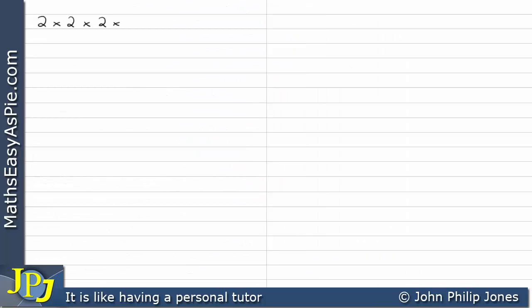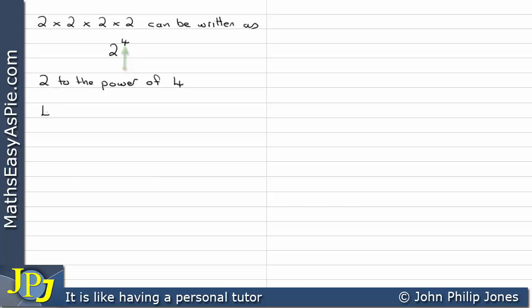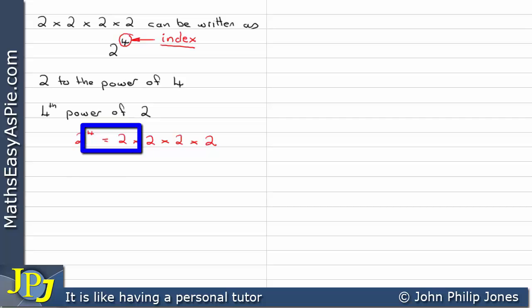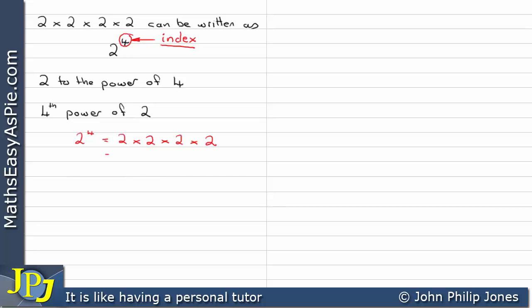2 times 2 times 2 times 2 can be written conveniently as 2 to the little 4, as you can see here, and this is said to be '2 to the power of 4' or 'the 4th power of 2'. The 4 is referred to as the index. So when we see 2 to the 4, we know we can write this out as 2 times 2 times 2 times 2, because the index 4 indicates how many 2's to multiply together — giving us 16.